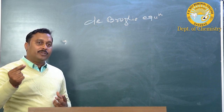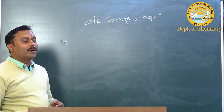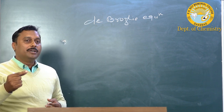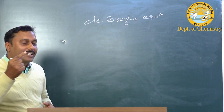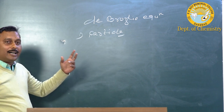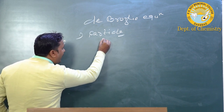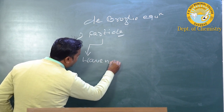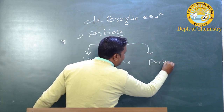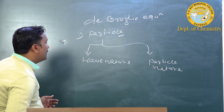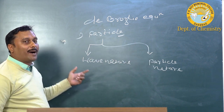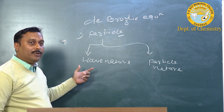Keeping this in mind, later on in 1924 de Broglie told that like light, a particle also has dual character — wave nature as well as particle nature. The wave associated with this particle is called a matter wave or de Broglie wave.